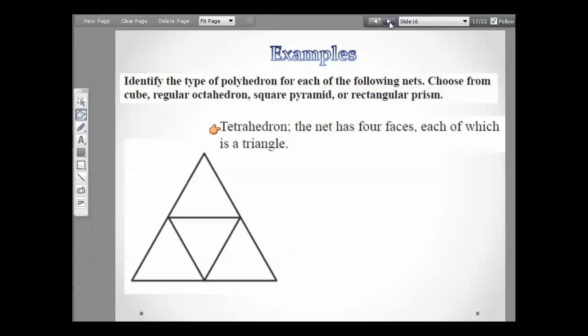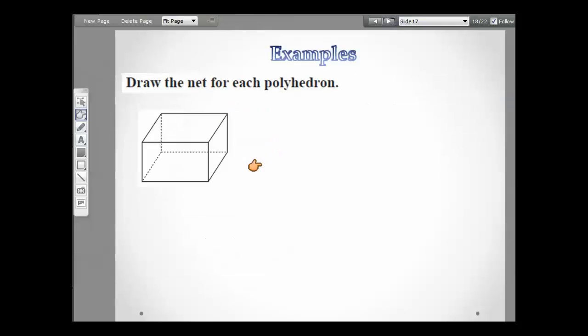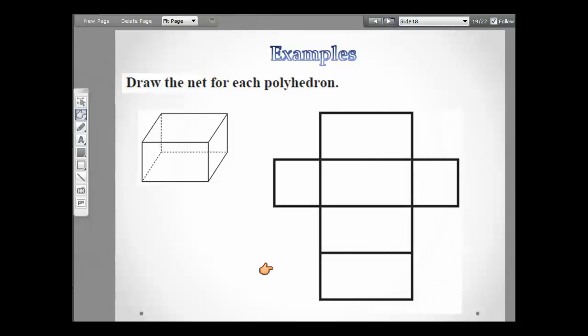Now this example is asking us to draw a net of each polyhedron. Well, this is a rectangular prism, and this is just my example earlier where I said if you took a box and you cut it down and laid it flat, this is what it's going to look like. You're going to have your four faces here, and then you're going to have these two faces.